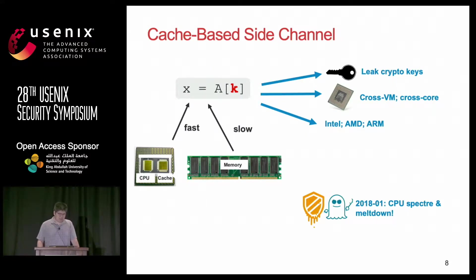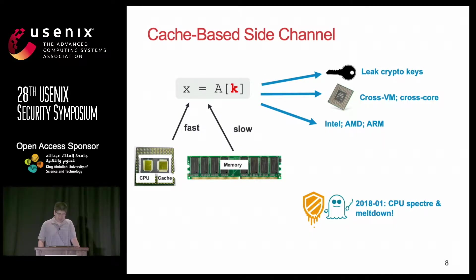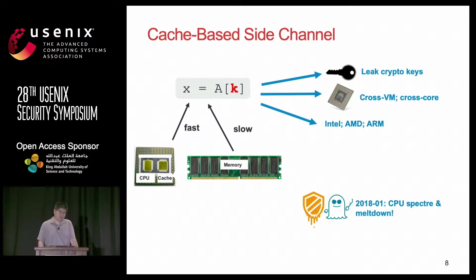Cache-based side channels exist because we have a hierarchical memory system. In addition to the slow high-capacity memory, we have a shared fast on-chip but low-capacity storage called cache. Previous research has shown that this shared cache can be problematic — they leak information like cryptographic keys. Those attacks are extremely penetrating because they are cross-VM, they can be cross-core, and they affect most mainstream architectures: Intel, AMD, and ARM.